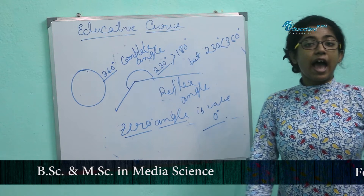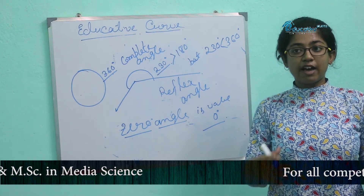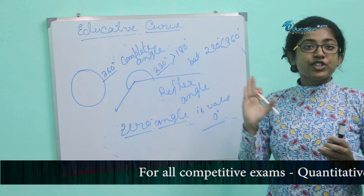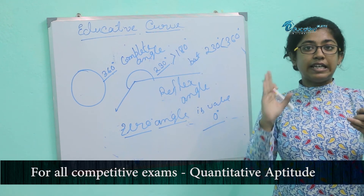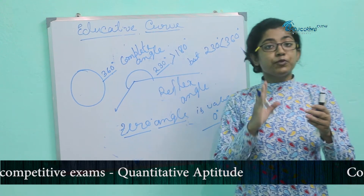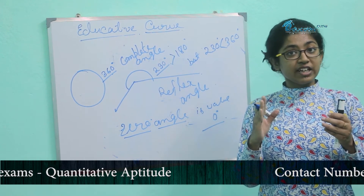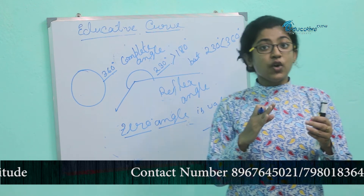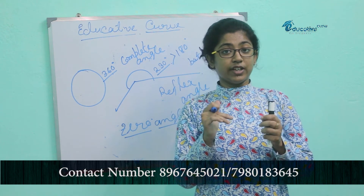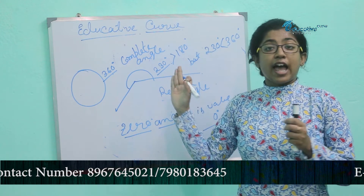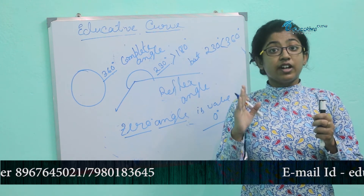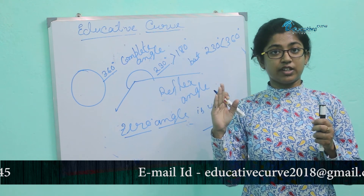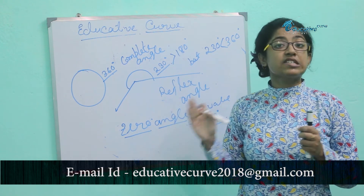From the above discussion, here are some important notes: Acute angle is greater than 0° but less than 90°. Obtuse angle is greater than 90° but less than 180°. Right angle is exactly 90°. Straight angle is 180°. Reflex angle is greater than 180° but less than 360°. And zero angle is 0°.